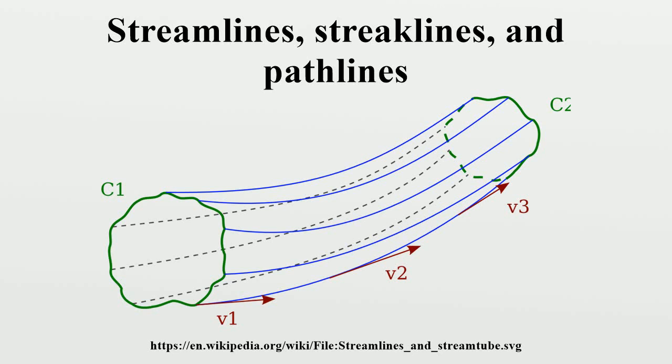Streamlines, streaklines, and pathlines are field lines resulting from this vector field description of the flow. They differ only when the flow changes with time, that is, when the flow is not steady.